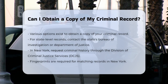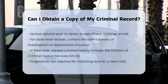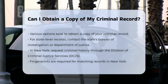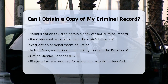For example, in New York State, you can request your criminal history record through the Division of Criminal Justice Services (DCJS). To do this, you must submit your fingerprints, which allows DCJS to match your fingerprints to fingerprint-based records. You can schedule an appointment for fingerprinting using the Identigo website and provide one form of identification.